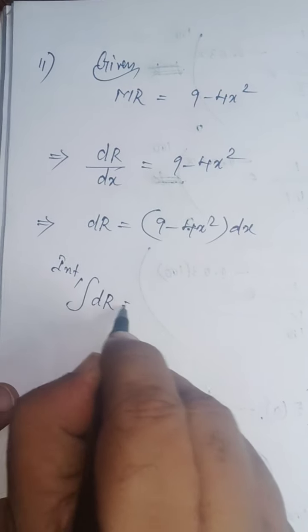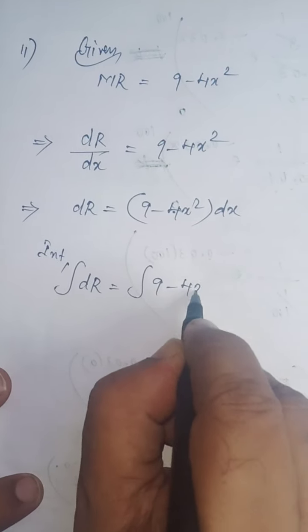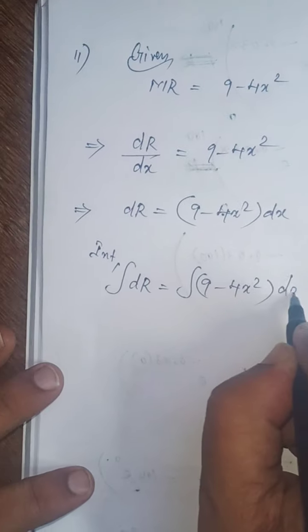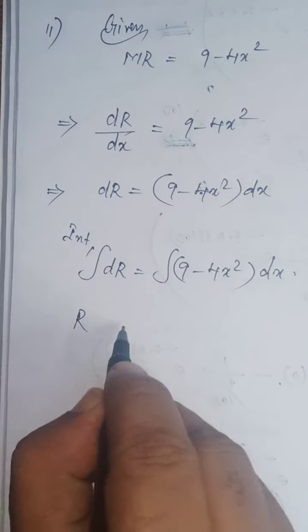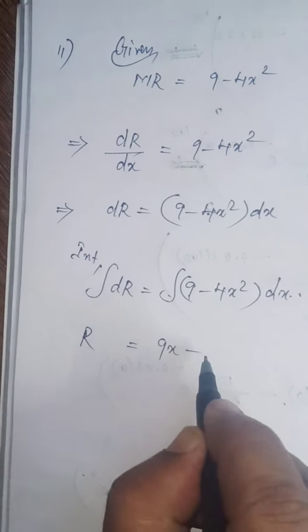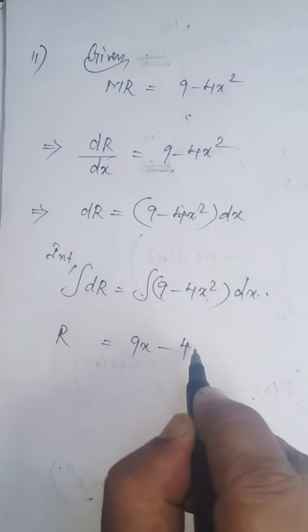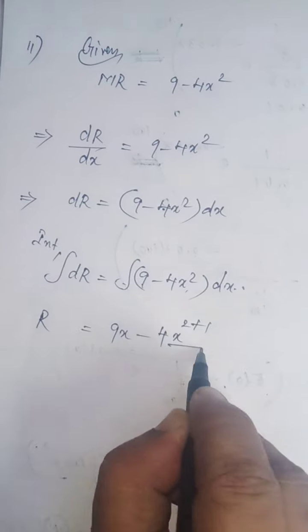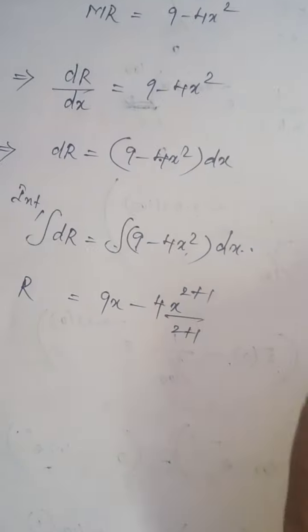∫dR = ∫(9 - 4x²)dx. Integral of dR equals R. 9 is constant, integral of dx is x. For x squared integration, you know the formula: ∫x^n dx = x^(n+1)/(n+1).